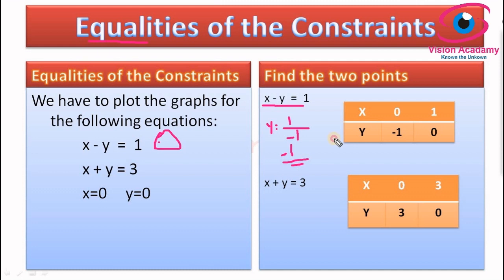When y is equal to 0, what is x? Since x has a positive value, x equals 1 over 1, which is 1. So: when x is 0, y is minus 1; and when y is 0, x is 1. These are our two intercept points for the first constraint.